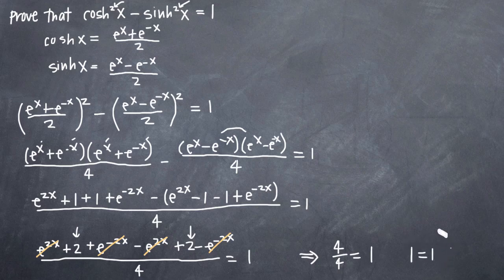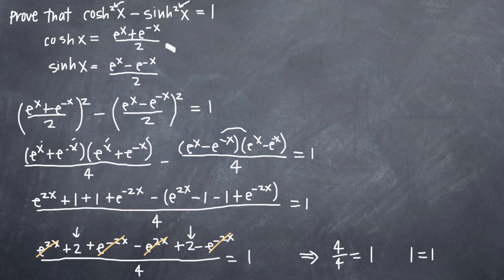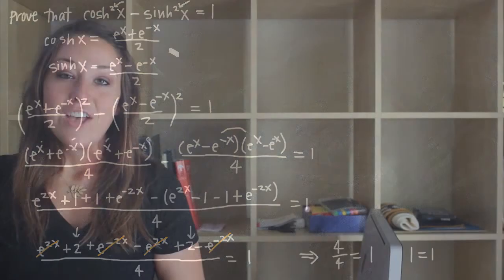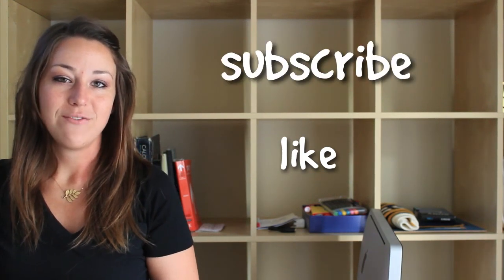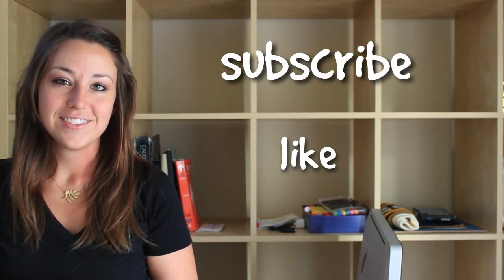And that's how we can prove that this hyperbolic function is equal to 1 using hyperbolic identities. I hope you found that video helpful. If you did, like this video below and subscribe to be notified of future videos.